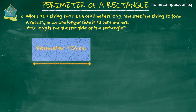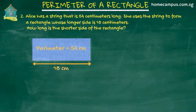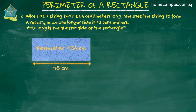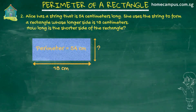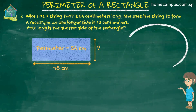The second detail in the question is that the longer side is 18 centimeters. In a rectangle, the longer side is called the length, so the length of the rectangle is 18 centimeters. What we have to find out is how long the shorter side is — in other words, we have to find the breadth, or the width, or the other side of the rectangle.